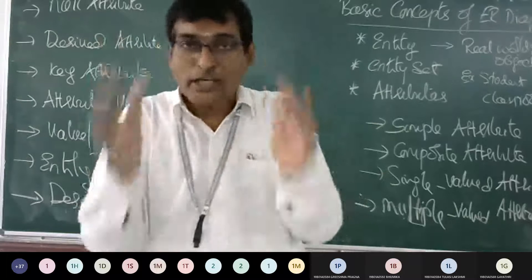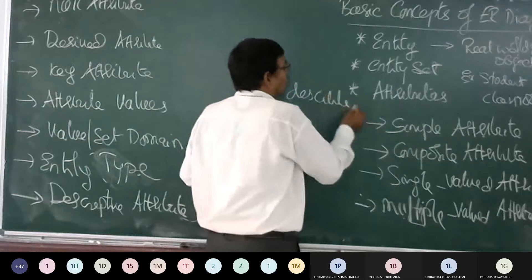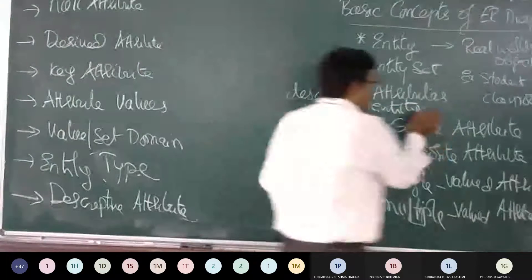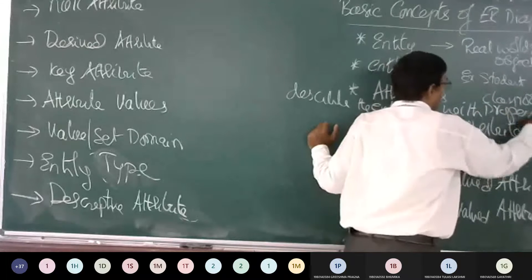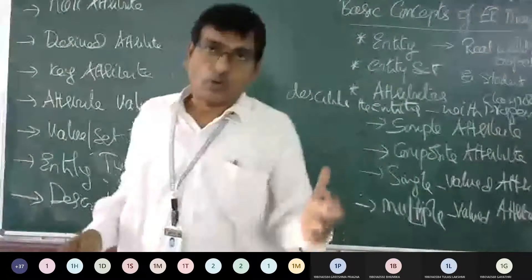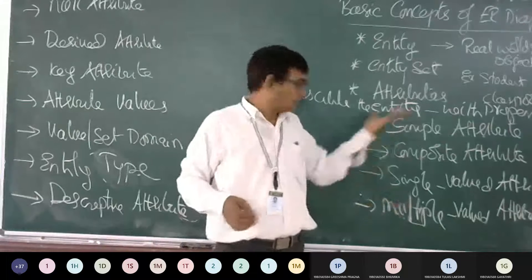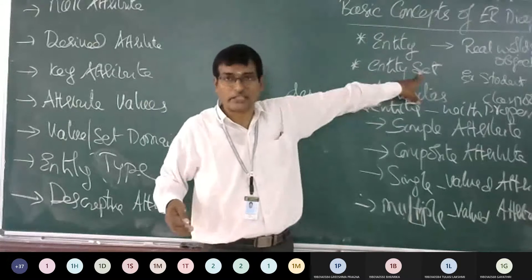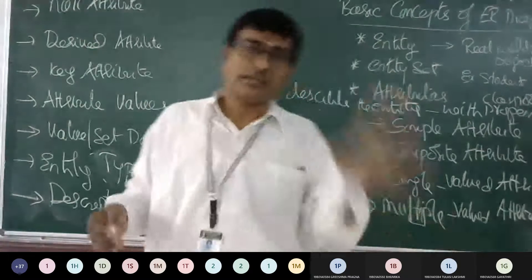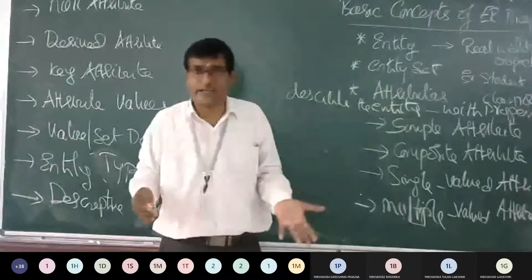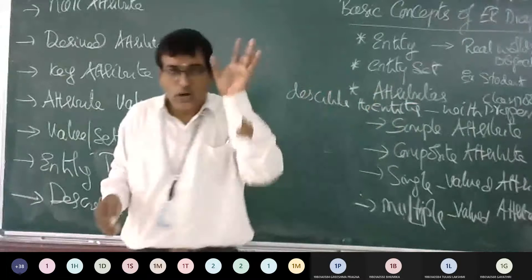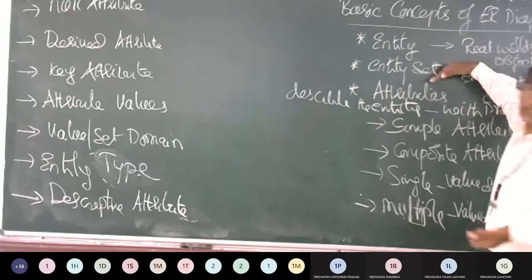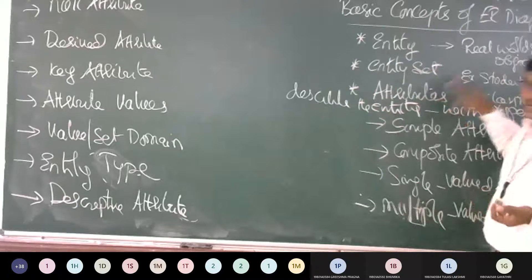We need to describe the entities, and how we describe them is with properties. Those properties can be simple, composite, single, or multiple. To highlight and identify the entity set, we describe its properties — which come with data types, metadata, etc. For that, we need some attributes.